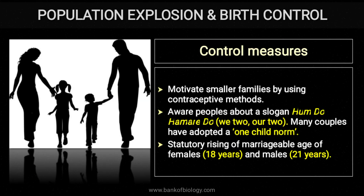What control measures can be adopted to decrease population explosion? Motivate smaller families by using contraceptive methods. Persons having more children than the preferred amount would be counseled to decrease their family size. Awareness of slogans like 'Hum Do, Hamare Do' — meaning we two, our two — many couples have adopted a one-child norm, preferring one child whom they can care for and educate properly. The marriageable age has been fixed — 18 years for females and 21 years for males.